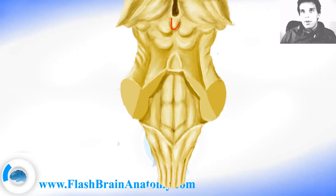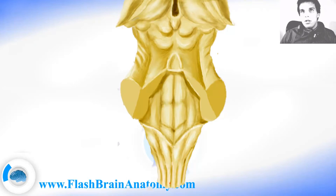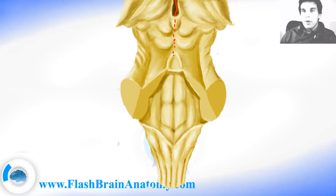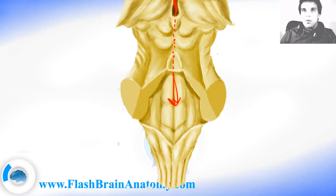The pineal gland is part of the epithalamus. This area here is called the habenular trigone. This opening here is the third ventricle. If you go inside the third ventricle, you travel through a channel called the cerebral aqueduct and you exit in the fourth ventricle.